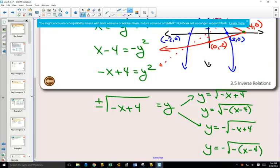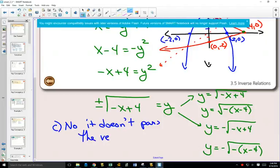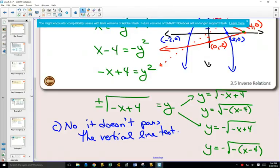Is the inverse, is the red graph, a function? No. So for part c there, no, it doesn't pass the vertical line test. Questions for this one are 5 and 6.